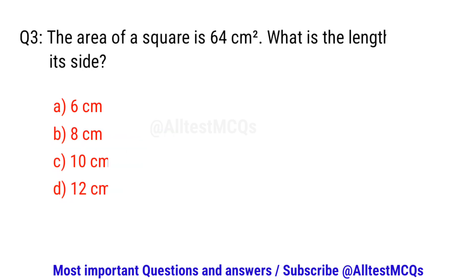Question number three. The area of a square is 64 cm². What is the length of its side? The right option is B. 8 cm.